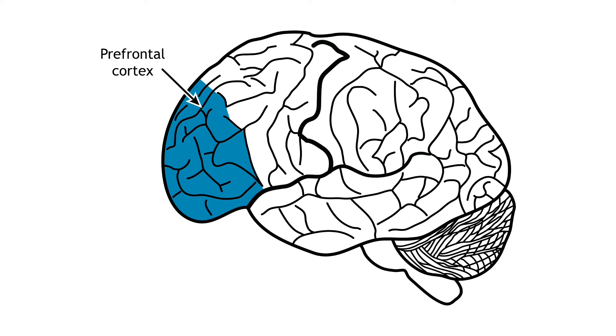The prefrontal cortex may not be fully developed until an individual reaches their mid-20s. Experts think this might explain why teens are more likely than adults to participate in risky behaviors.